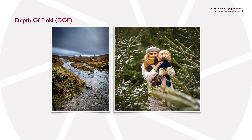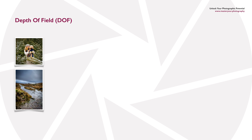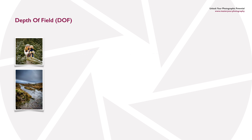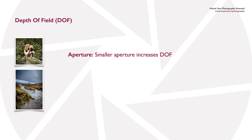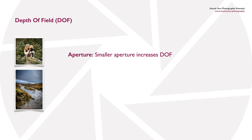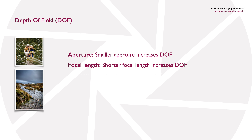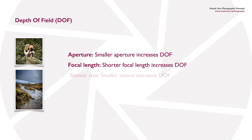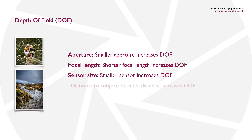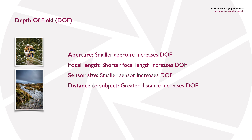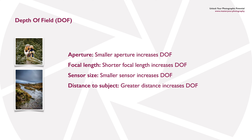We usually talk about the aperture being the main thing that affects depth of field, but it's actually affected by four different things. Aperture is one of them, but also the focal length of the lens that you're using, the sensor size in your camera, and the distance between your camera and the subject.